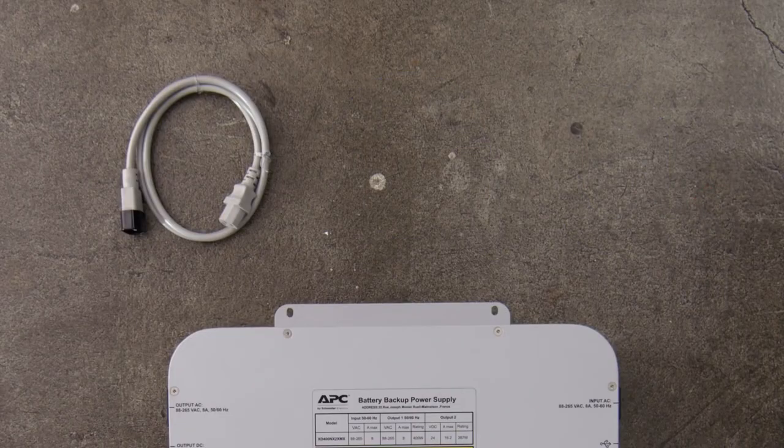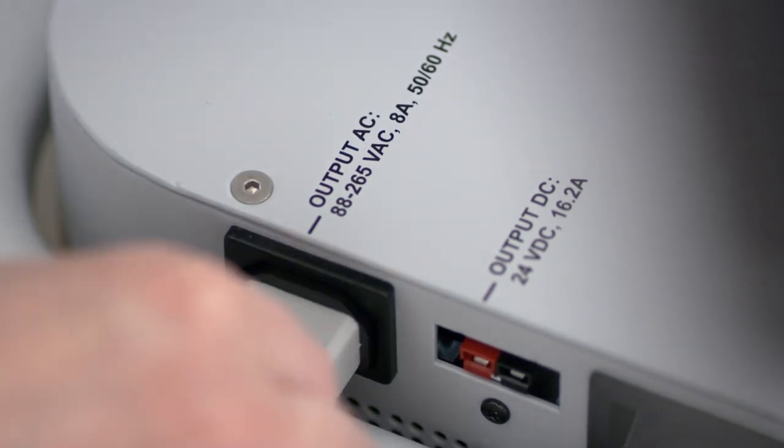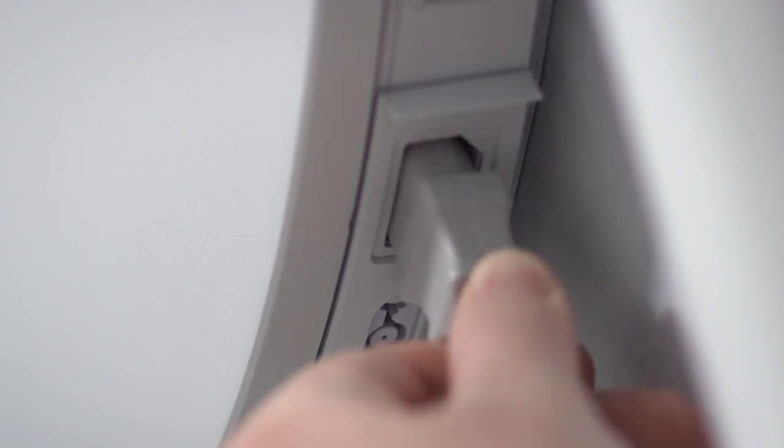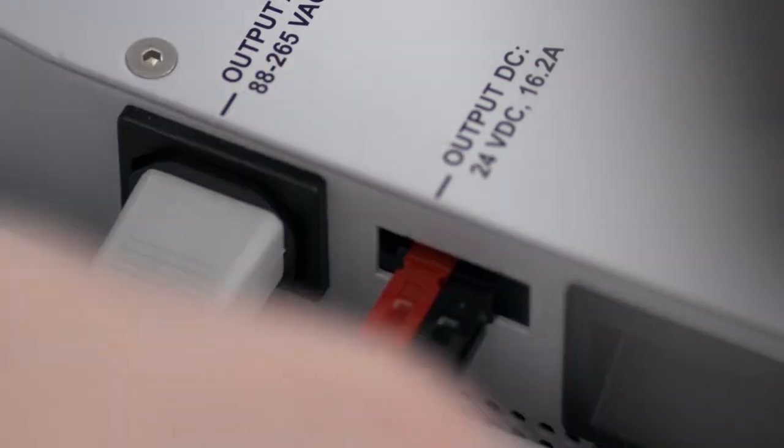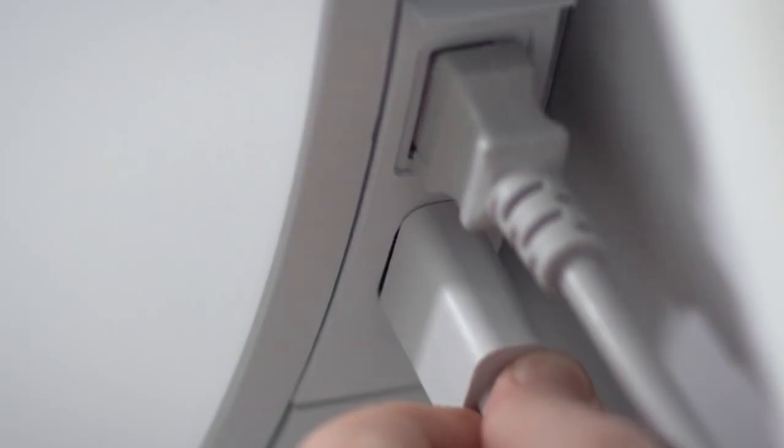Now locate the three cables from the charge mobile battery box. Plug the three pin power cable into the output AC port on the battery and connect it to the corresponding port on the Surface Hub. Next, plug the two pin cable into the output DC port on the battery and connect it to the port on the device.